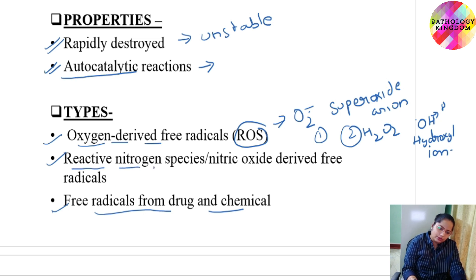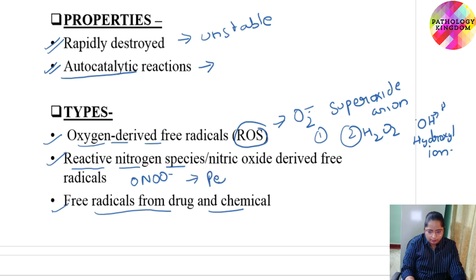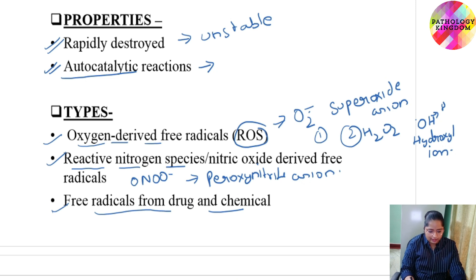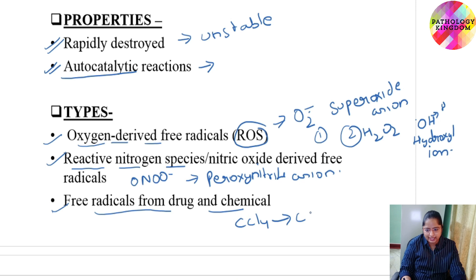Coming on to reactive nitrogen species — the highly unstable example is ONOO⁻, that is peroxynitrite anion. For free radicals from drugs and chemicals, the enzymatic metabolism of exogenous compounds can generate free radicals. The example is CCl4 — carbon tetrachloride — which gives rise to a carbon trichloride free radical.